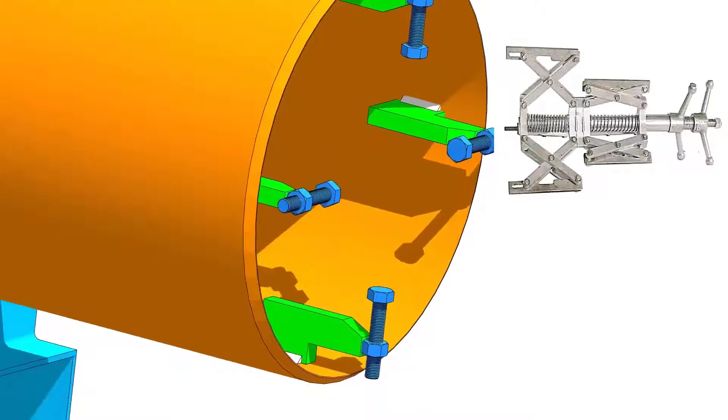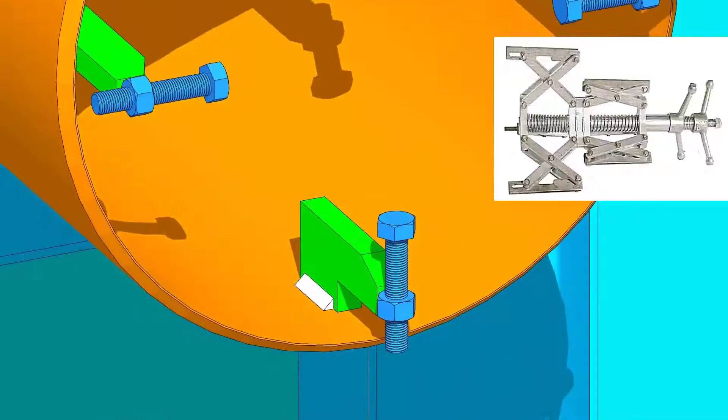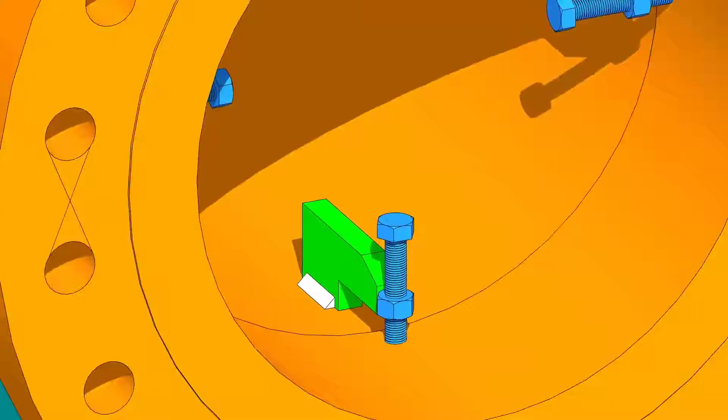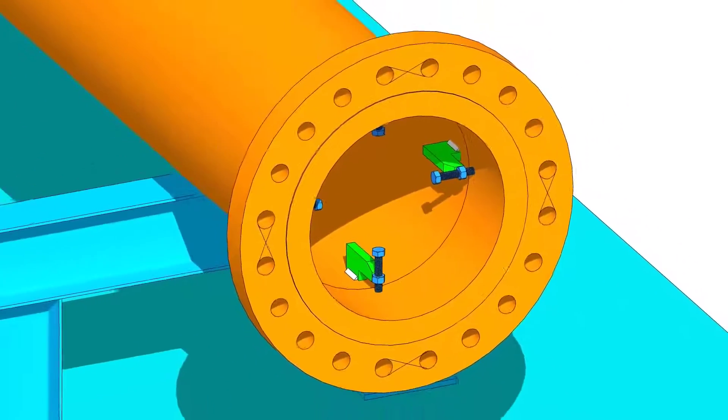It is easy to do pipe to flange fit up if there is an internal pipe clamp, but in this tutorial we will follow the normal method.